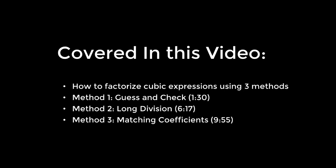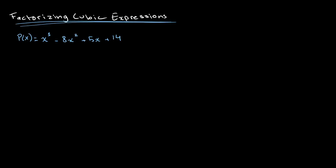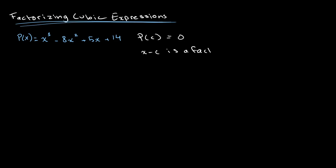In this video I will be teaching you how to factorize cubic expressions using three different methods. With cubic expressions, when you know one factor you're able to find the rest. The key tool to recall is the factor theorem: if p(c) = 0, then (x − c) is a factor. Using the factor theorem, we're able to find our first factor and from that find the rest of the factors.